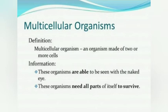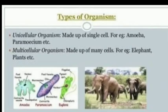Multicellular organisms are made up of two or more cells. Because of that, they are visible to our naked eye. As they are multicellular, they depend on other parts to survive as well.